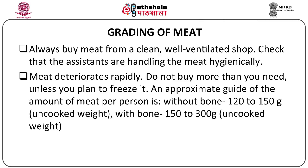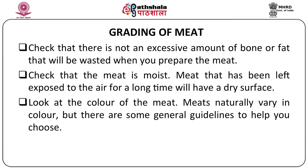Always buy meat from a clean, well-ventilated shop and check that the assistants are handling the meat hygienically. Meat deteriorates rapidly, so do not buy more than what you need unless you are planning to freeze it. An approximate guide of the amount of meat needed per person without bones is about 120–150 grams uncooked weight, and with bones about 150–300 grams uncooked weight. Check that there is not an excessive amount of bone or fat that will be wasted, and that the meat is moist, as meat left exposed to air for a long time will have a dry surface.